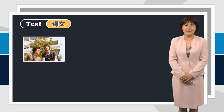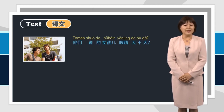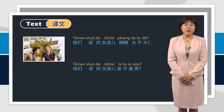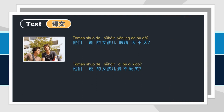Now let's come to the text. Look at the picture and listen to the dialogue. After listening, please answer: 她们说的女孩眼睛大不大？她们说的女孩爱不爱笑？Let's listen. 听说你有女朋友了，我认识她吗？就是我们班那个长着两个大眼睛、非常爱笑的女孩。她不是有男朋友吗？那个已经是她的前男友了。